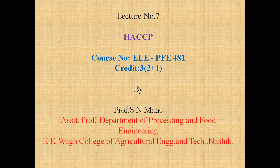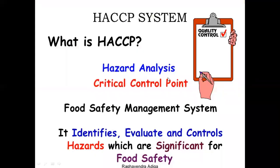Today we will learn about HACCP. HACCP stands for Hazard Analysis Critical Control Point and it is a Food Safety Management System. It identifies, evaluates, and controls the different hazards which are significant for food safety.